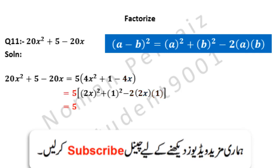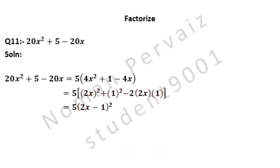Is equal to 5 comes as it is. Now we can apply formula to write it as (a - b)². And our a is 2x and b is 1, so we write 5(2x - 1)². Hence, this is our answer.